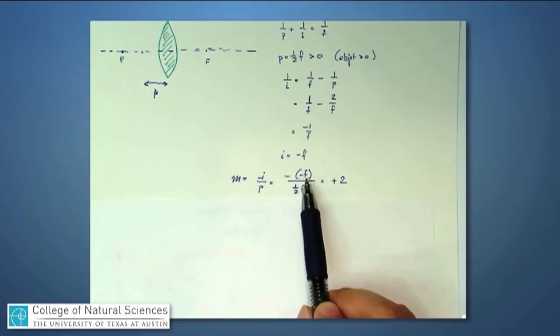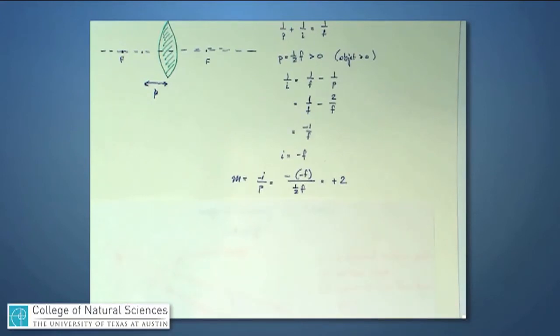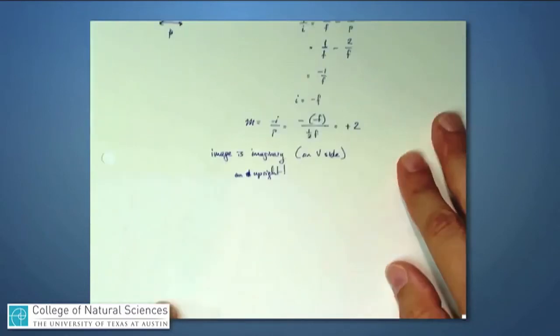So when I put in minus of a minus f over 1 half f, that becomes plus 2. So this object has an image that's quite a bit bigger. It's twice as big as the original object. And since this is a positive number, it's an upright image. It looks in the same orientation as the original object itself. So it's an imaginary or a virtual image, and it's upright, and it's enlarged.